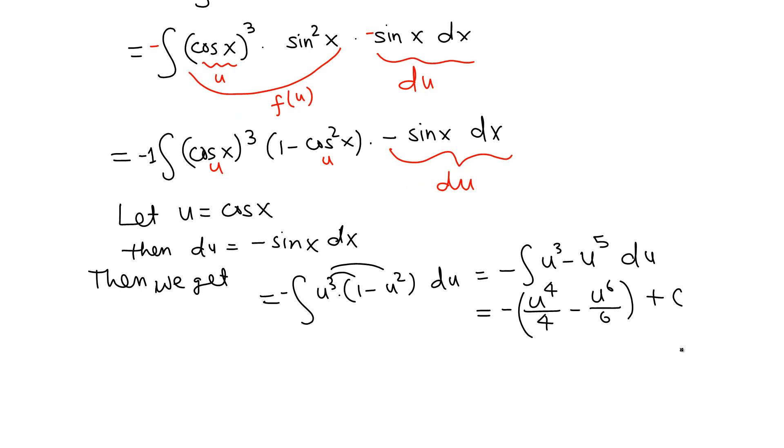Finally, we want to back-substitute the value of u and distribute the negative from outside. So u is just cosine x, so this is negative cosine to the 4x over 4, which is the same as negative one-quarter cosine to the 4x. Negative negative is positive one-sixth, which is cosine to the 6x over 6, plus C.